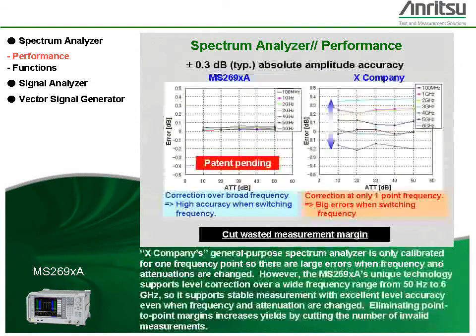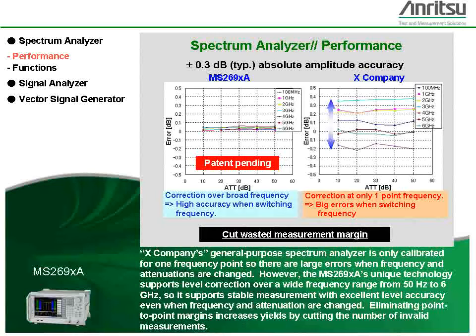A competitor's general-purpose spectrum analyzer is only calibrated for one frequency point, so there are large errors when frequency and attenuations are changed. However, the MS2830A's unique technology supports level correction over a wide frequency range from 300 kHz to 4 GHz, supporting stable measurement with excellent level accuracy even when frequency and attenuation are changed. Eliminating point-to-point margins increases yields by cutting the number of invalid measurements.